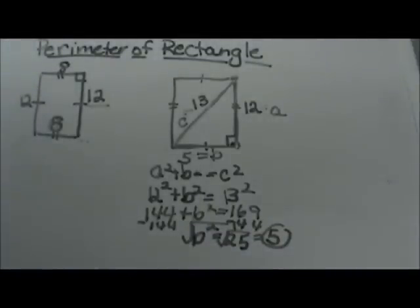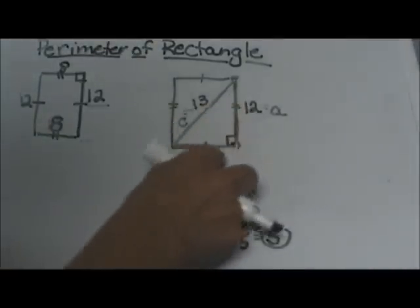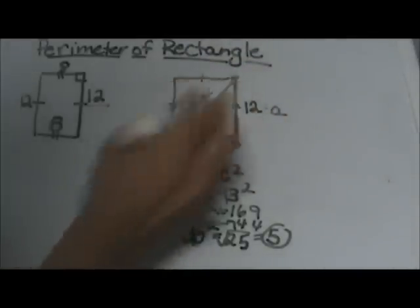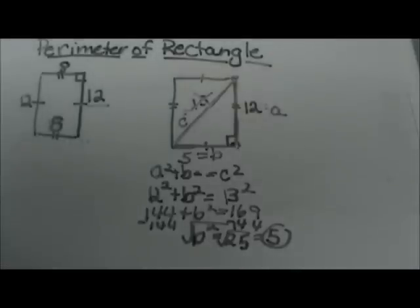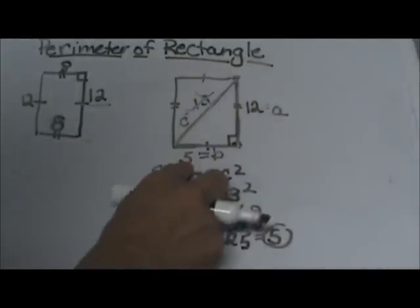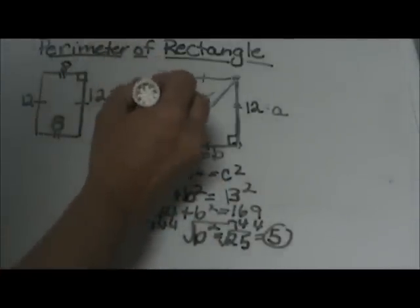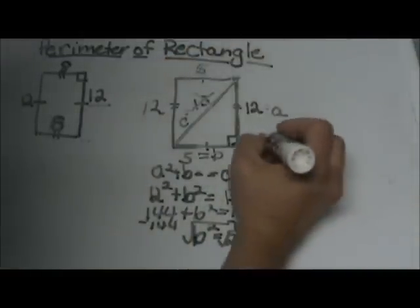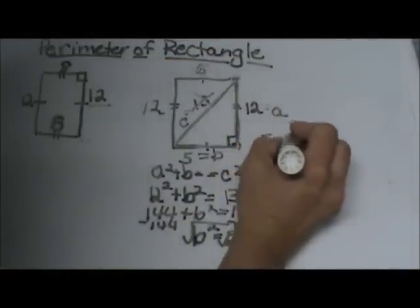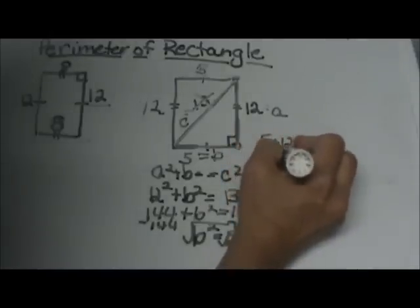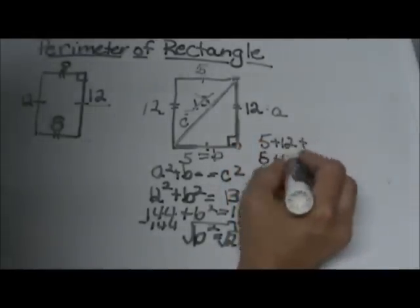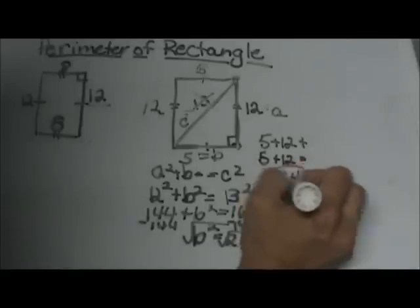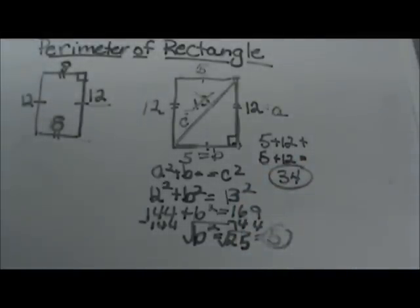Now I can use one of my two methods to find perimeter. I can add the four sides together — I am no longer going to use the 13, because I don't need the diagonal to find the perimeter. So I am just going to take 5 plus 12 plus 5 plus 12. So 5 plus 12 plus 5 plus 12 is 17 plus 17, which is 34. So the perimeter of that rectangle would be 34, using the Pythagorean Theorem to find one side. I hope this video was helpful.